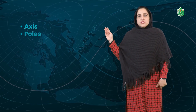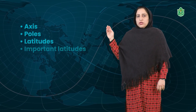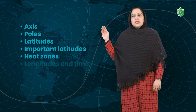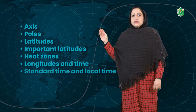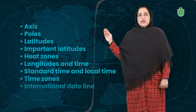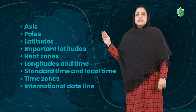In this chapter, we are going to learn about the axis and the poles, latitudes and important latitudes, heat zones, longitudes and time, standard time and local time, and time zones and international date line.